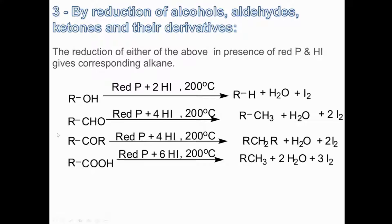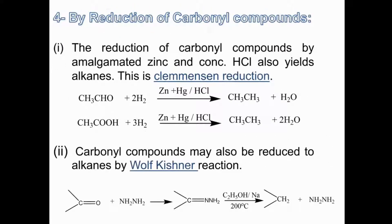You can also reduce ketones and aldehydes using Clemmensen and Wolff-Kishner reductions — two types of reduction which reduce the carbonyl group into a CH2 group. Method four is by reduction of carbonyl compounds. The reduction of carbonyl compounds by amalgamated zinc and concentrated HCl also yields alkanes — this is Clemmensen reduction. You react an aldehyde with zinc-mercury and HCl to reduce the carbonyl group into alkanes. Similarly, you can reduce a ketonic carbonyl group into a CH2 unit, and carboxylic acids can also be reduced to alkanes using Clemmensen reduction.